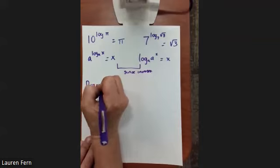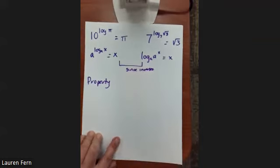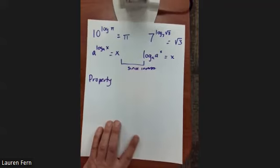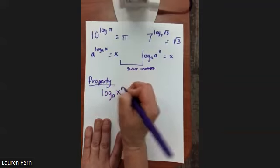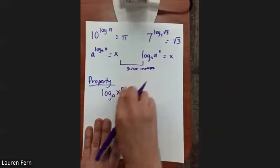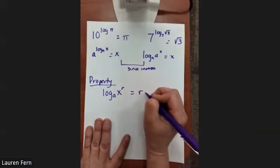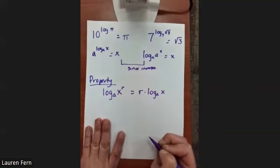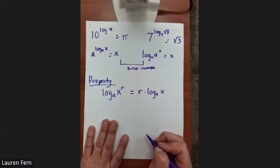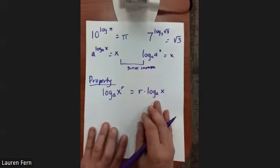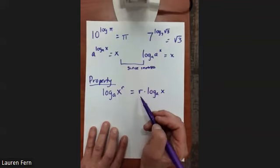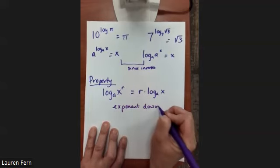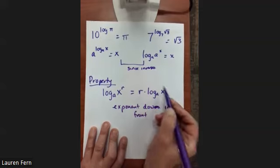Now the most important property: log base a of x^r equals r times log base a of x. What this says is that if you're taking the log base a of something raised to a power, you can bring your power down in front. Note: these are not the same — a, x, and r — the exponent bebops down in front.